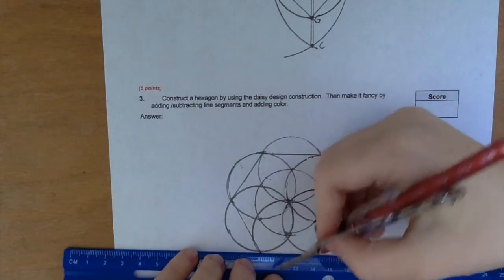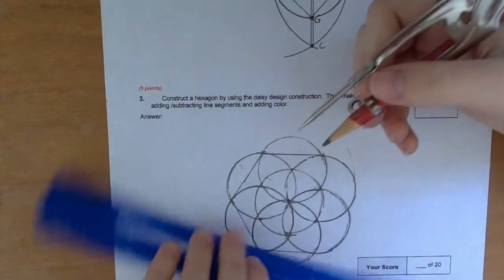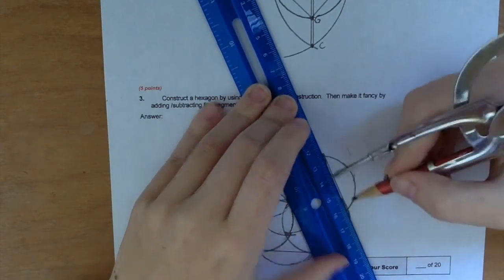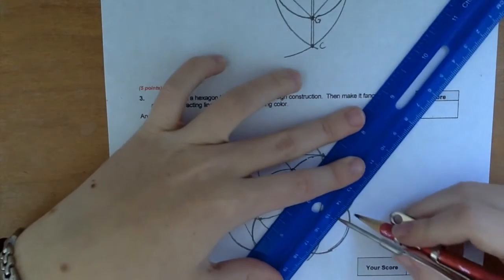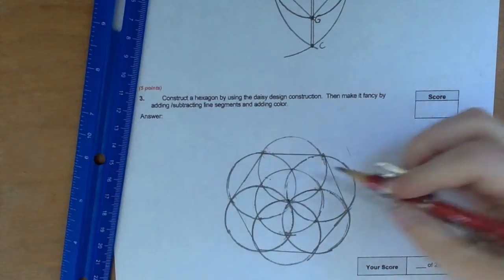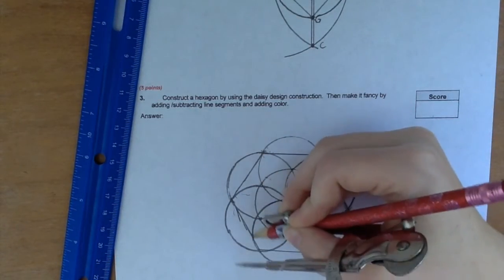And then here and here. And that's a hexagon. You see this, this right here? Wow, it's a hexagon. Congratulations.